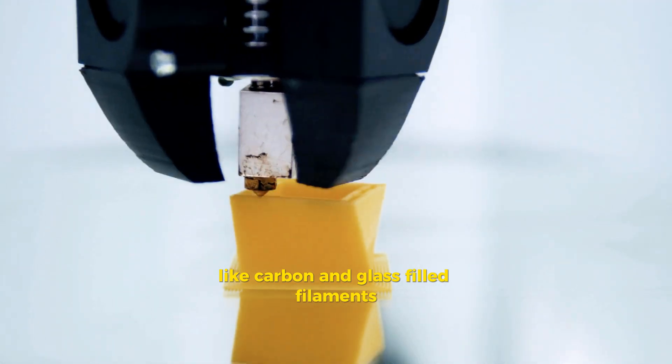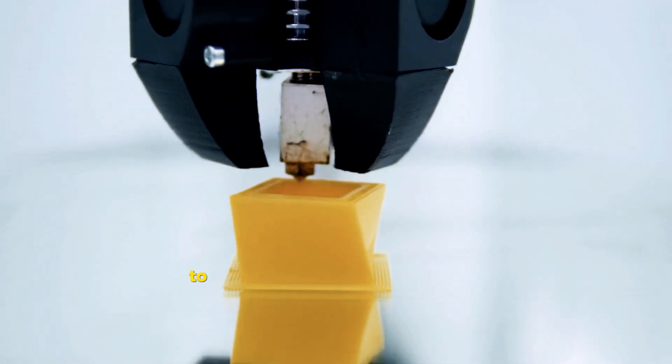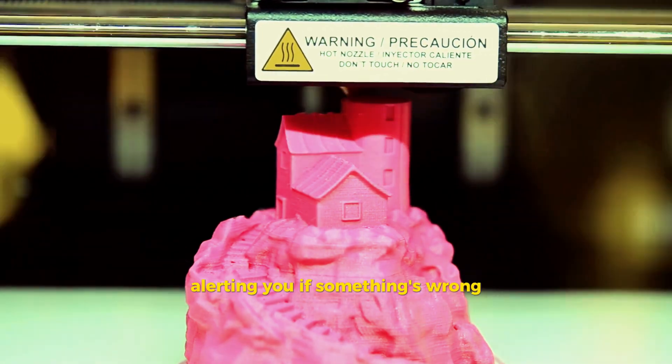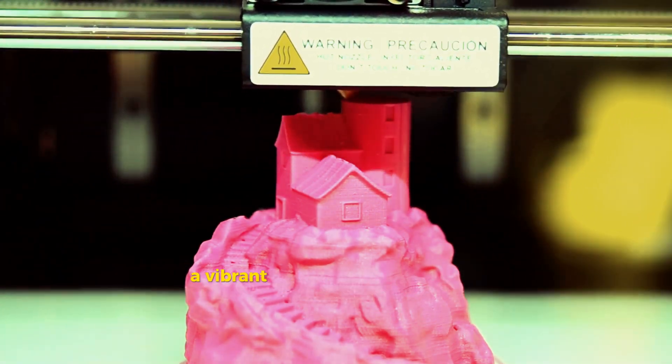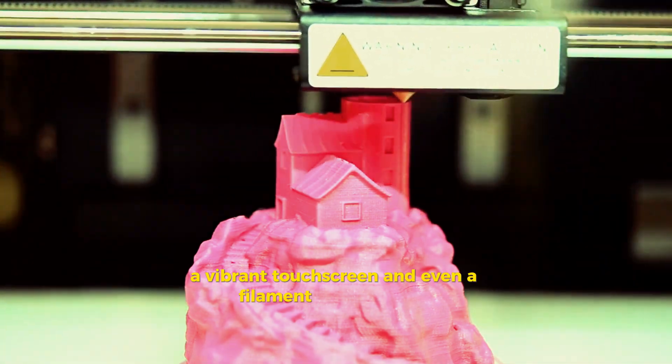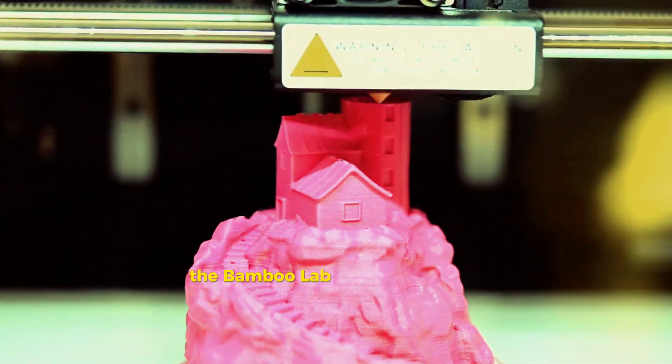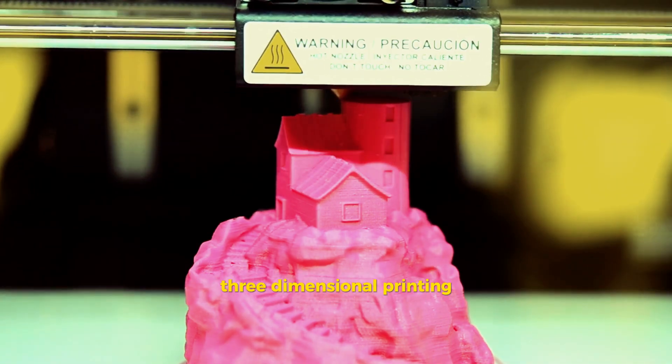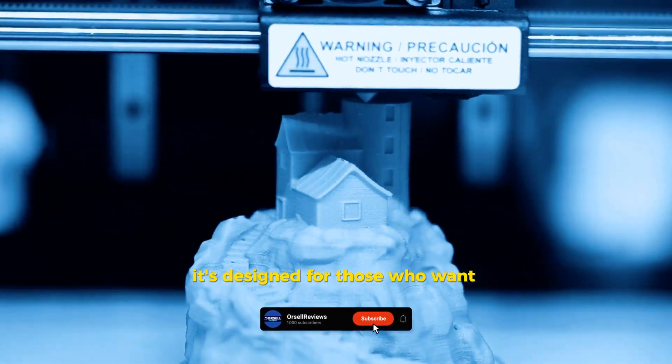Plus it has onboard LIDAR to scan the print bed and first layer for any issues, alerting you if something's wrong. It's got Wi-Fi connectivity, a vibrant touch screen, and even a filament drying option. The Bamboo Lab X1 Carbon is the epitome of premium three-dimensional printing. It's designed for those who want the best of the best, with high quality components and features that make printing easier and more reliable.